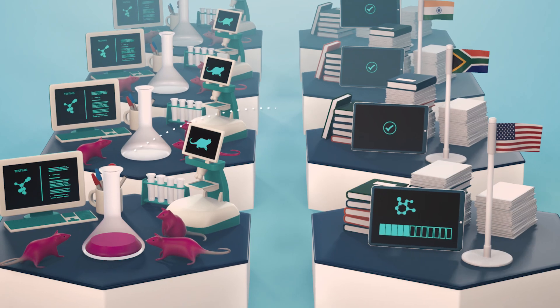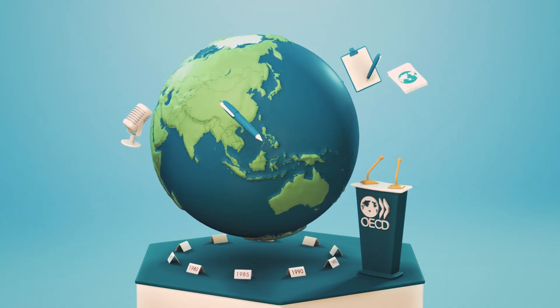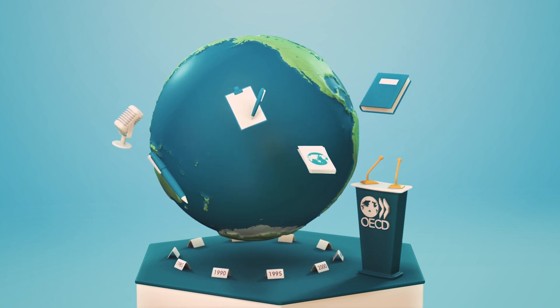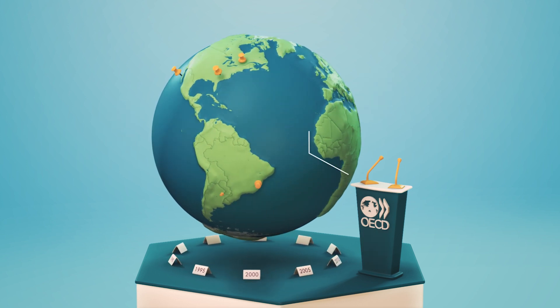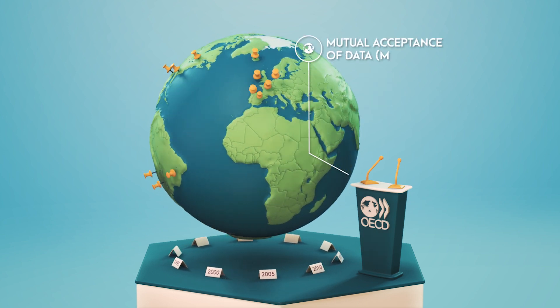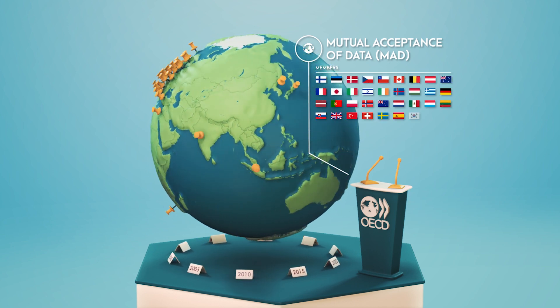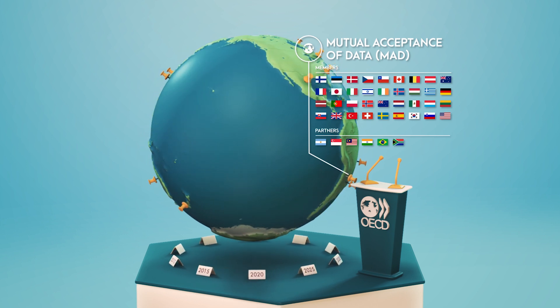For 45 years, the OECD has helped governments manage chemicals in a way that saves society costs and facilitates trade and economic development while protecting health and the environment. For example, the OECD Mutual Acceptance of Data System ensures that a test conducted in one country is accepted in over 40 countries if it complies with the OECD test and data quality standards.